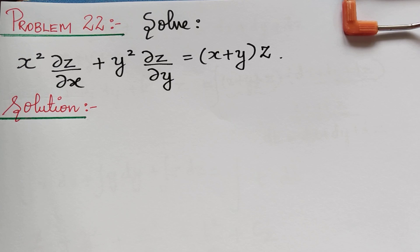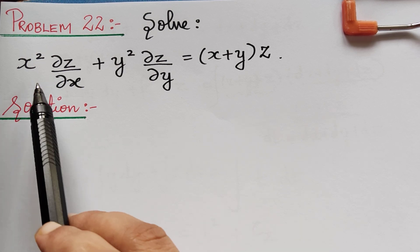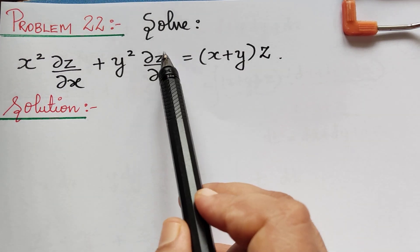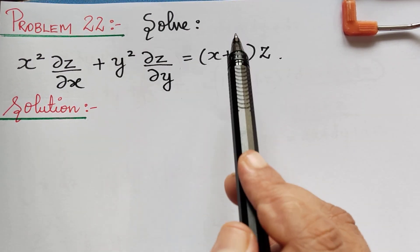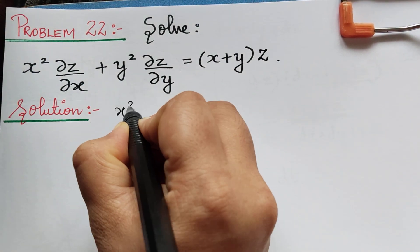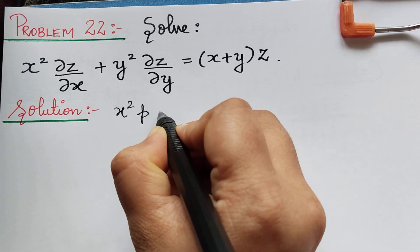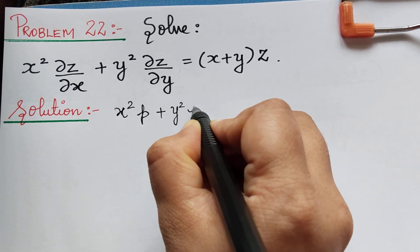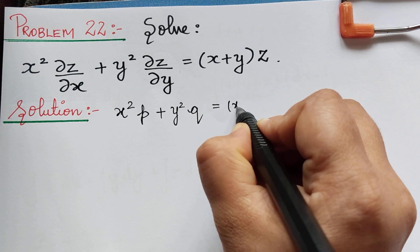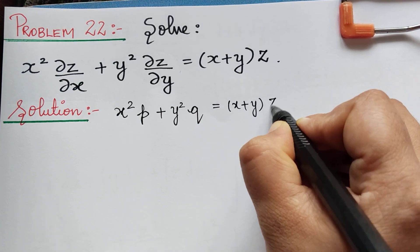Hello students. Under the topic Lagrange's linear partial differential equation, here we have problem 22. We identify that dou z by dou x is p, and dou z by dou y is q, so this problem can be rewritten as: x squared p plus y squared q is equal to x plus y multiplied with z.